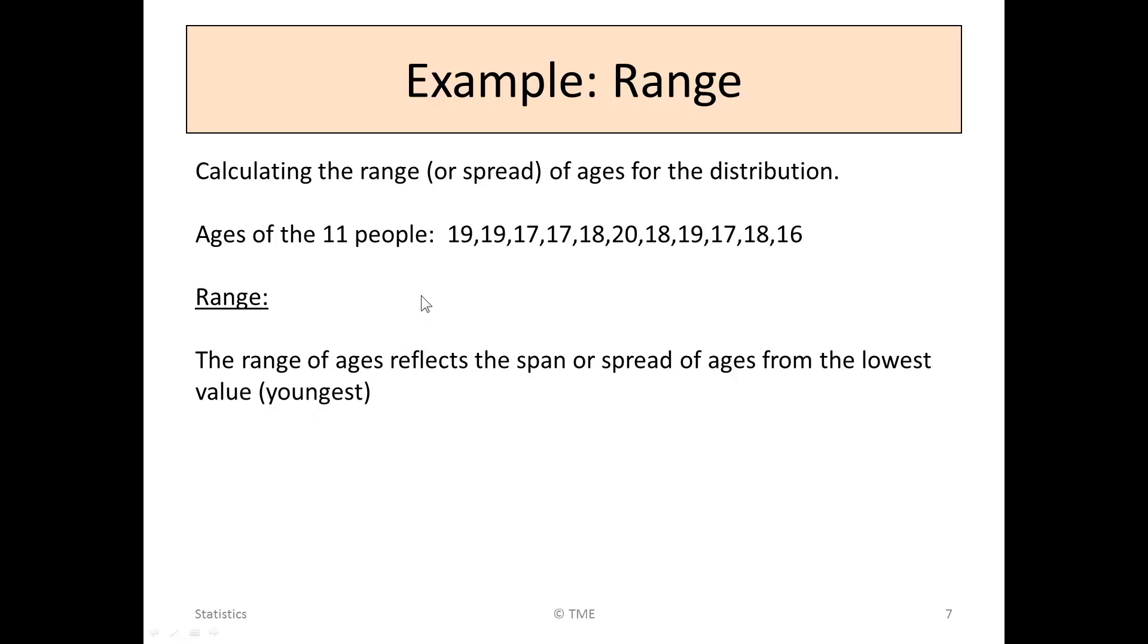The range of ages reflects the span or spread of ages from the lowest value. The lowest value, we might look and say, well, 19 is the lowest so far. 17 is lower. We keep with 17. They're all higher. Oh, and then there's 16. So 16, with no values coming after it, is the lowest value in the group.